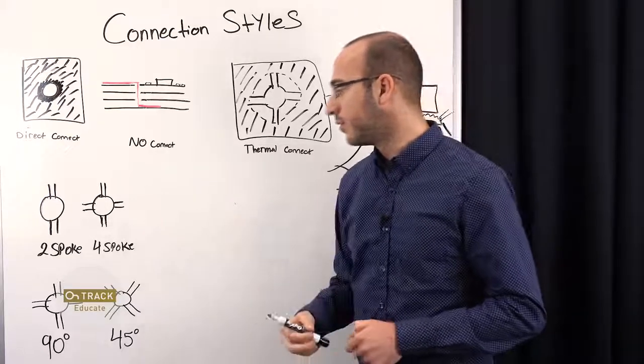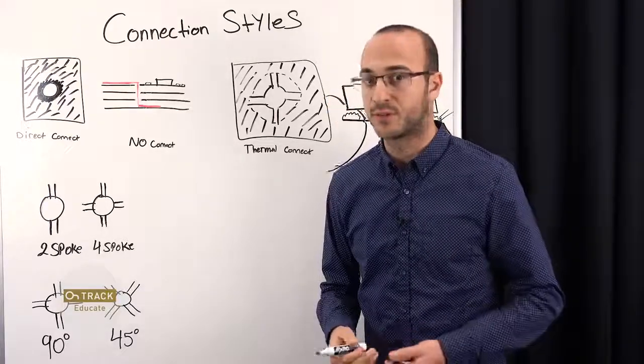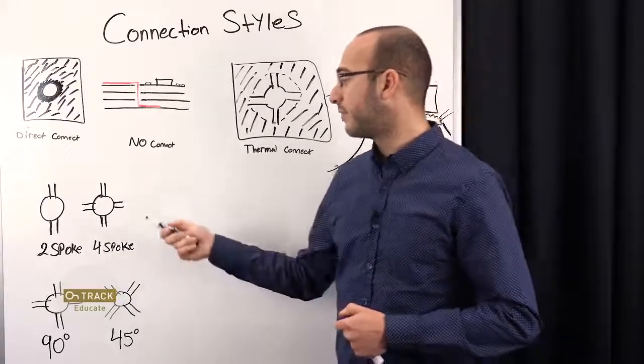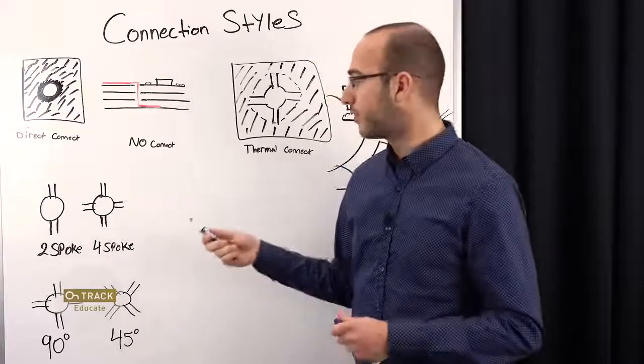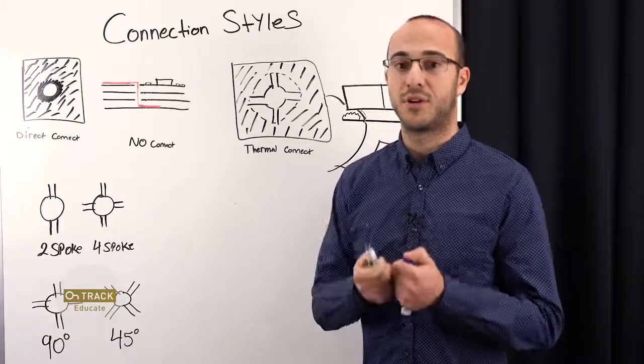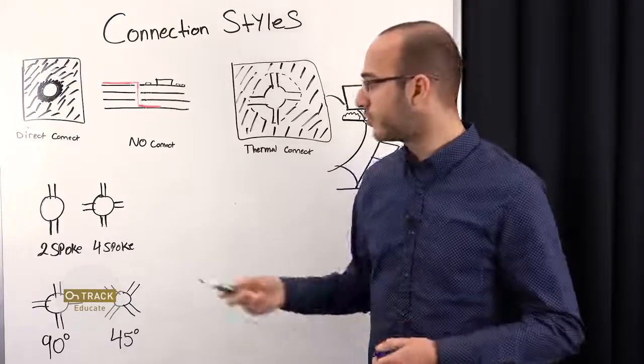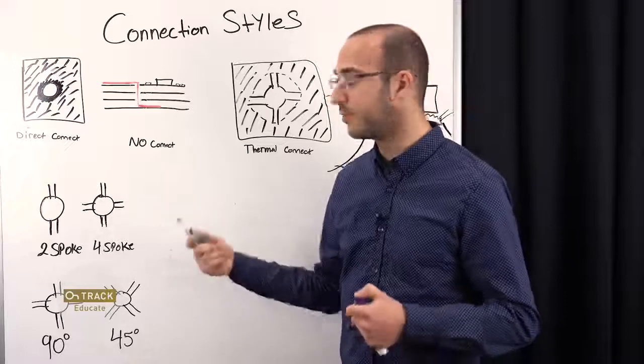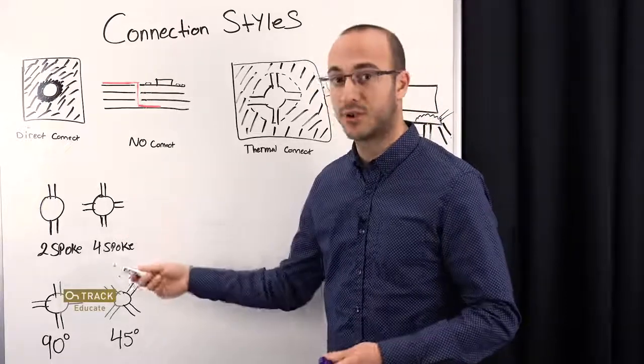So next, let's go to two spokes versus four spokes. Why would you want to have two or four spokes? Well, the reason you would want these different number of spokes is because of the current you're drawing. So if you're drawing more current into a pad or a via, you'd want more spokes.